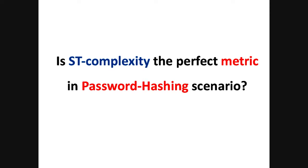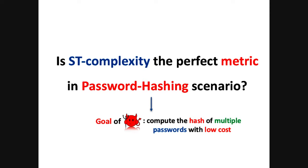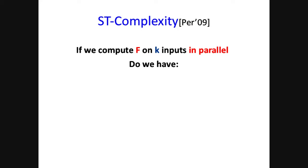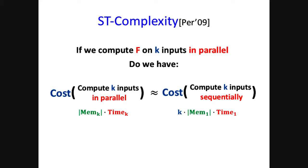But is size-time complexity really the right metric to use in the password hashing scenario? The goal of the adversary is to compute the hash values of multiple passwords together with low cost. If we can compute function f on multiple inputs in parallel, can we guarantee that no matter what strategy the adversary uses, the cost of computing them in parallel is approximately equal to the cost of computing them sequentially? Unfortunately, if we consider cost as size-time complexity, the answer is no.